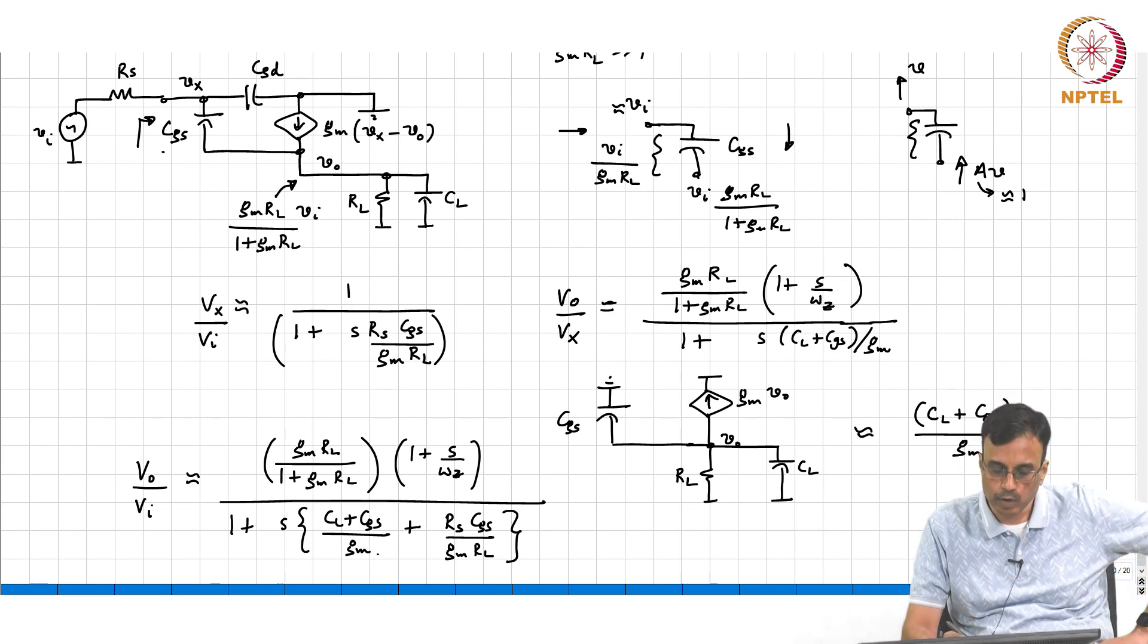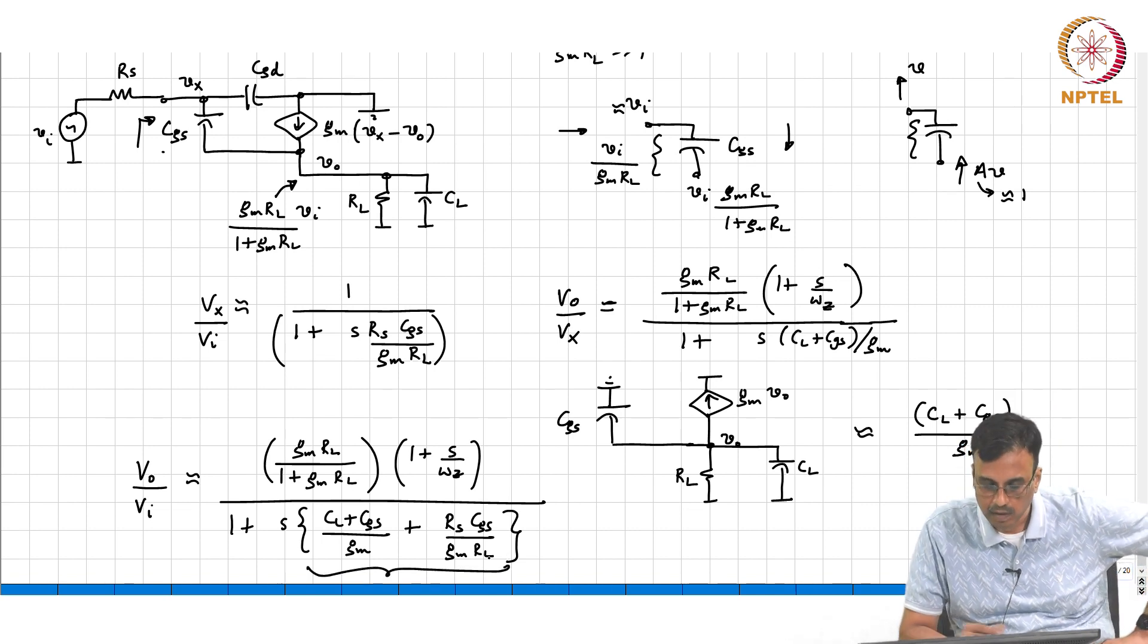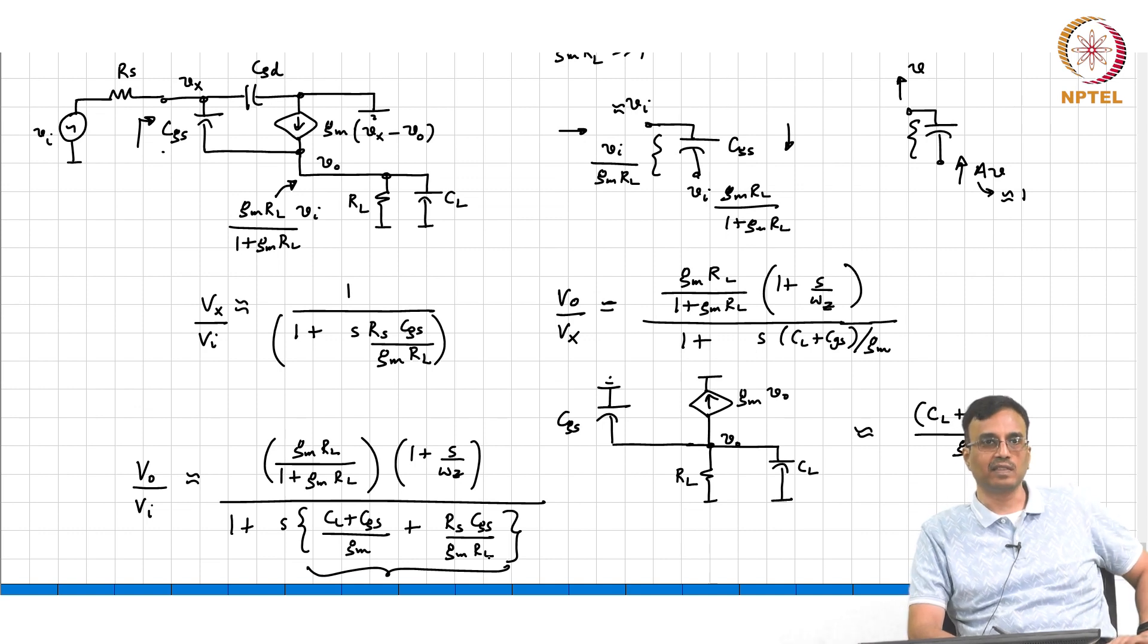So what comment can you make about this versus if you have the same RS and the same RL in the common source amplifier? This time constant is significantly smaller than the time constant associated with the common source.